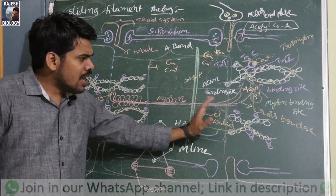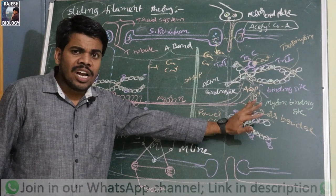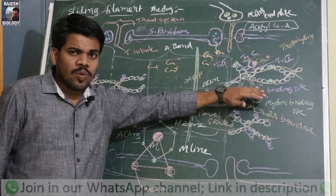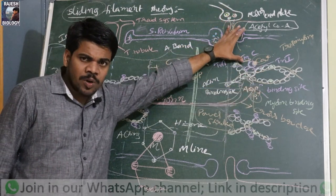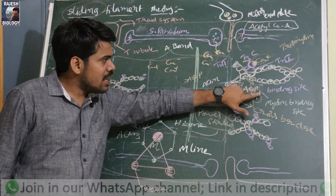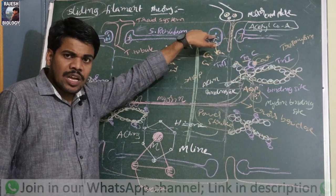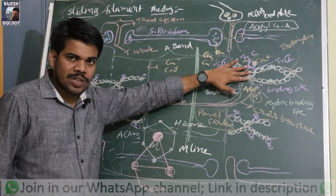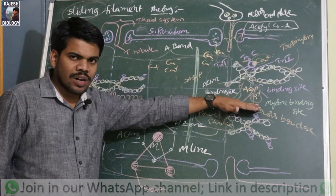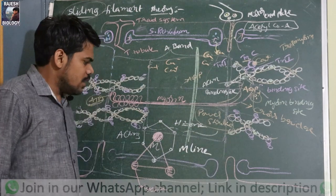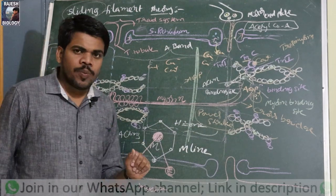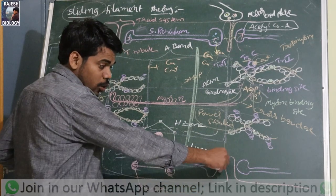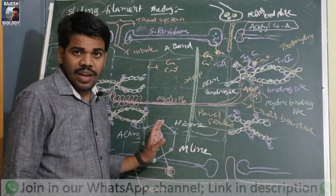This process continues until the calcium ions go back into the sarcoplasmic reticulum. Once the signals from the motor neuron are stopped, calcium ions are re-uptaken by the sarcoplasmic reticulum, myosin heads are masked by tropomyosin, and myosin comes back to its normal position. This is the sarcomere and muscle contraction.